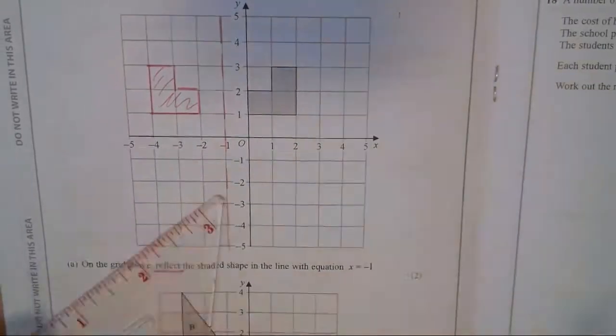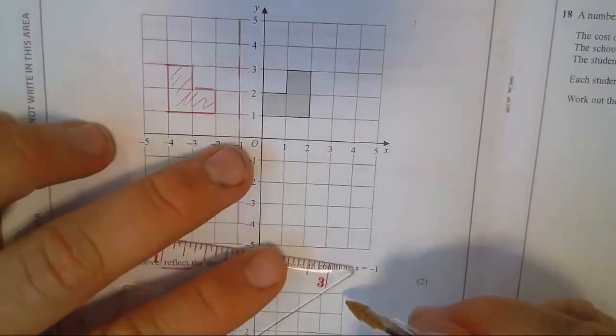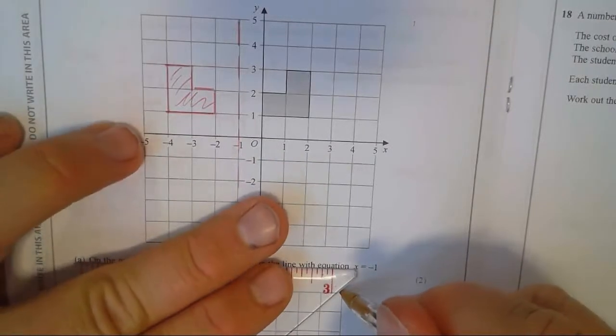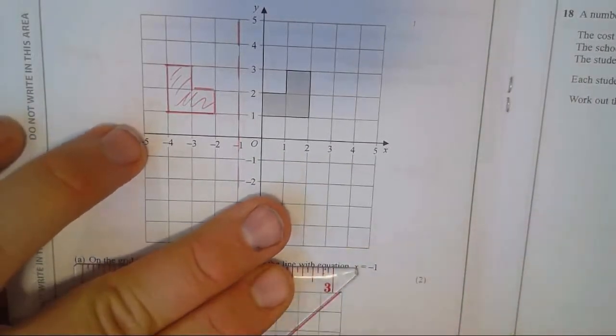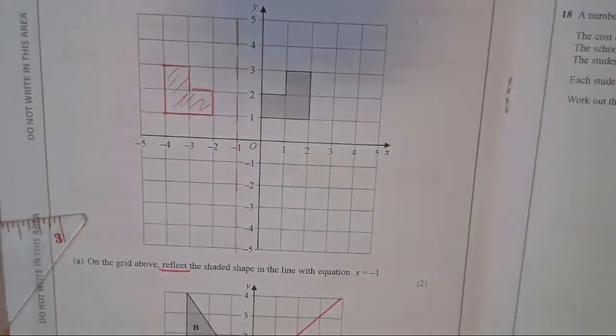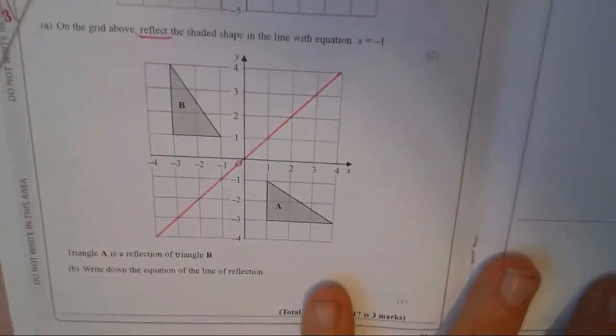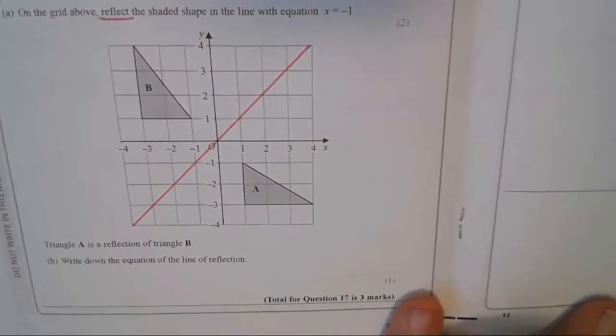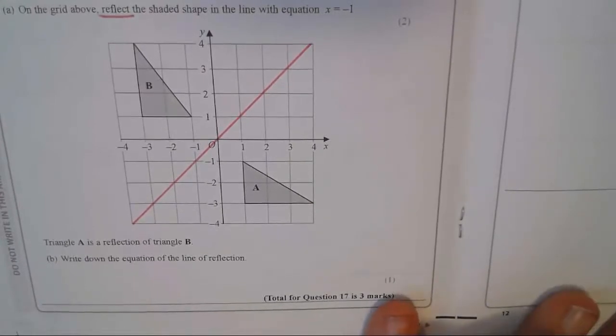And then this one, write down the equation of the line of reflection. Here's your line of reflection. Most people realized that this was the line of reflection and then weren't sure what the equation of that line is.